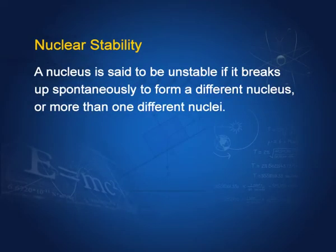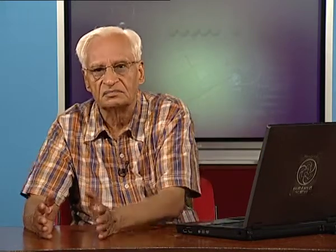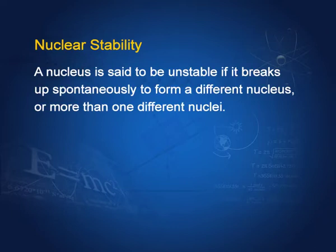A nucleus is said to be unstable if it breaks up spontaneously to form a different nucleus. In this process, the unstable nucleus may emit particles such as alpha particles, protons, neutrons, electrons, positrons, and photons.